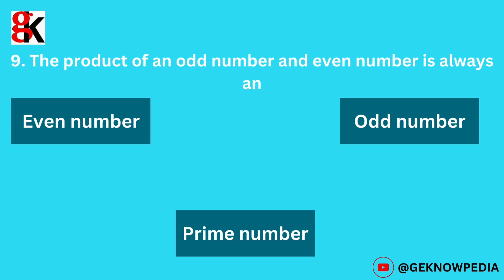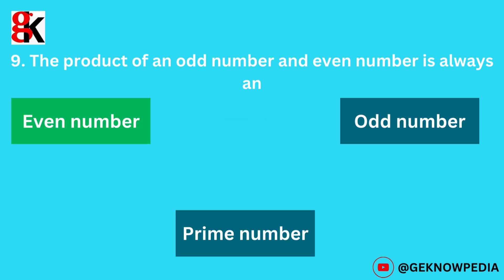Ninth question. The product of an odd number and an even number is always an: even number, odd number, or prime number. The correct answer is even number.